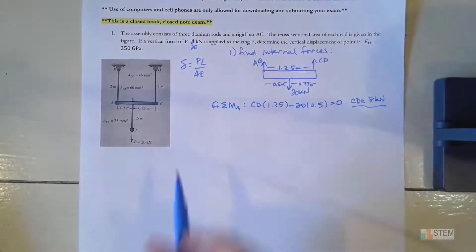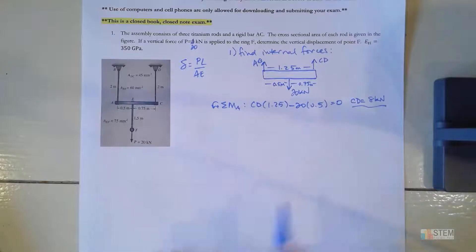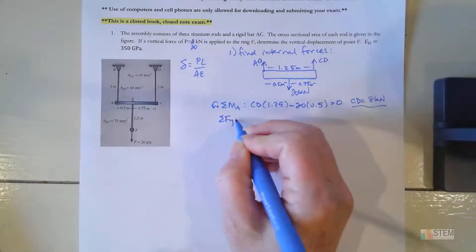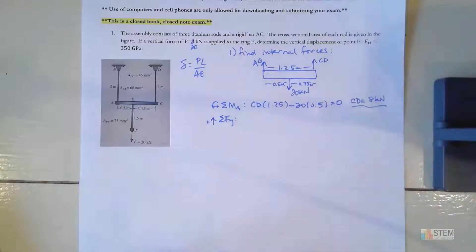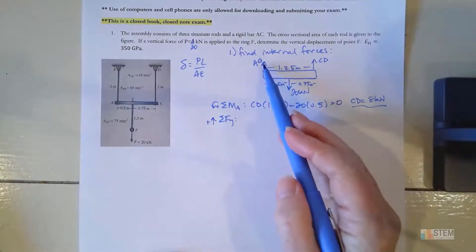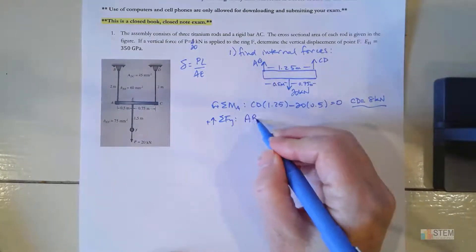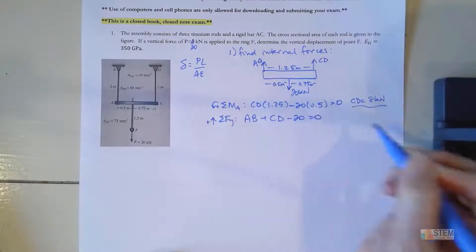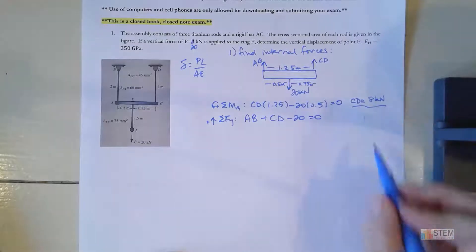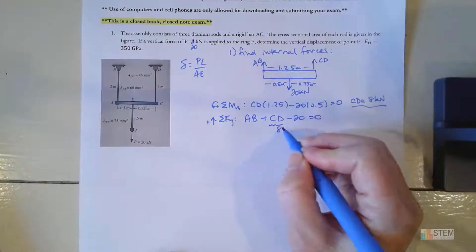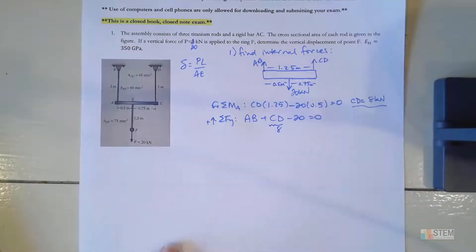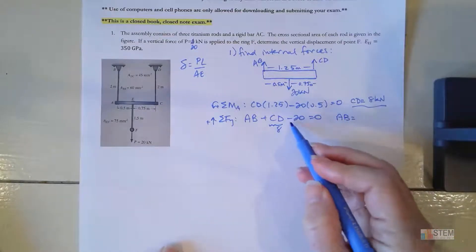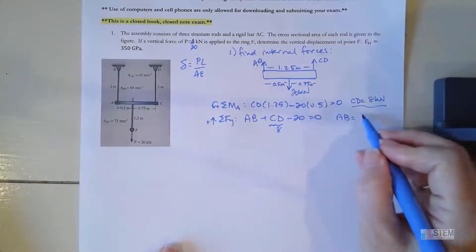Next, let's do the y-direction equilibrium with up positive: AB + CD − 20 = 0. I already know CD = 8, so plugging that in: AB + 8 − 20 = 0, which gives AB = 12 kilonewtons.